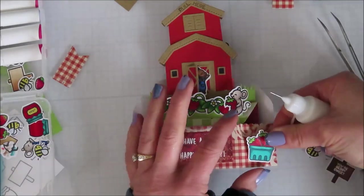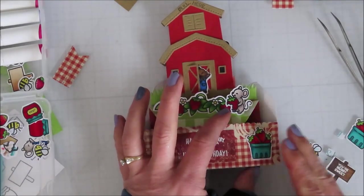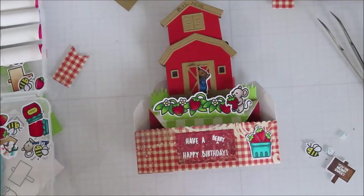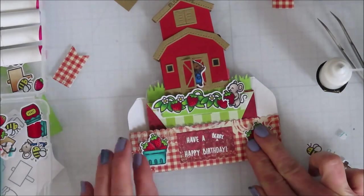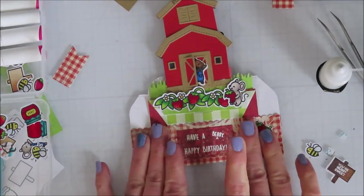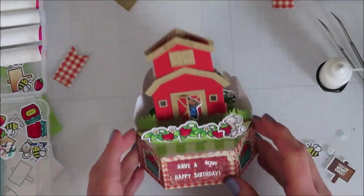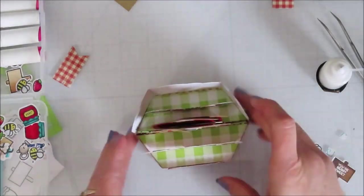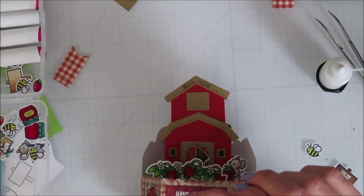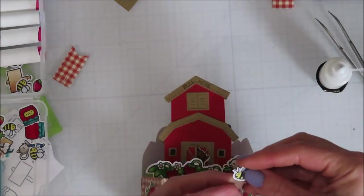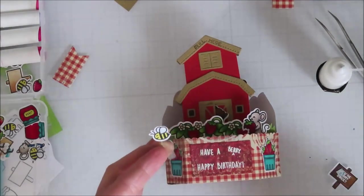Here are those strawberries that I had cut out using the Brother Scan and Cut. And isn't it beautiful? The berries tucked in the basket there. And then I will put the bee on a piece of acetate or an acetate pick and pop that up and off to the side.